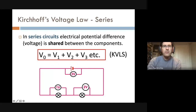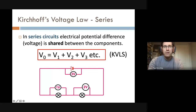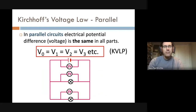This leads us to Kirchhoff's voltage law for series circuits, which looks similar to the current law: the total voltage from the battery equals the sum of all the voltages across the different elements. In our example, the battery provides three volts; the first lamp has a voltage of one volt and the second lamp has a voltage of two volts — one plus two equals three volts.